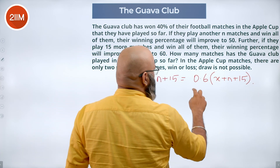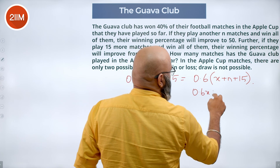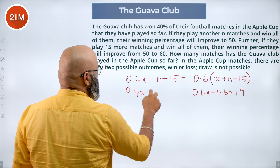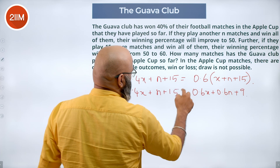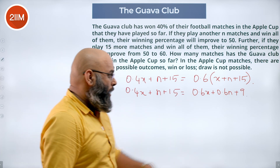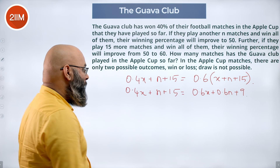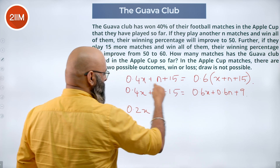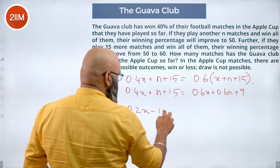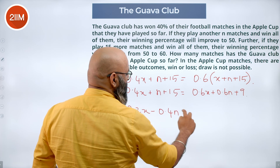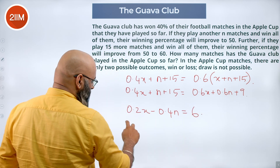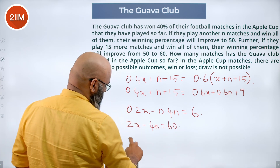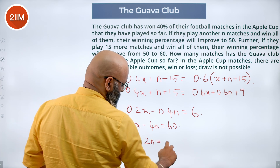Solving this equation: 0.4x plus n plus 15 equals 0.6x plus 0.6n plus 9. Bringing constants to one side and variables to the other: 0.2x minus 0.4n equals 6, or equivalently 2x minus 4n equals 60, which simplifies to x minus 2n equals 30.